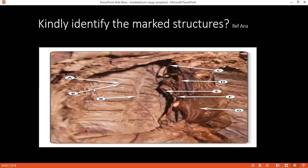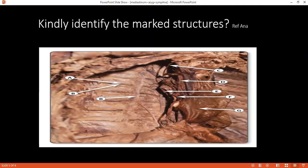Can you please identify the structures? It's A, B, and B again on the left-hand side, and then C, D, E, F, and G on the right-hand side — basically pointing at certain structures in the dissection of the thorax and mediastinum viewed from the right side. A and B are the intercostal vessels. The other B looks like the sympathetic trunk.